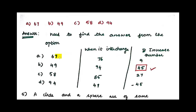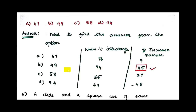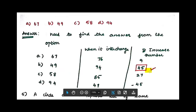So the answer is 67. Another option to check is 49: when interchanged, it becomes 94. The increase rate there is 45, but checking 49: 94 minus 49 is 45. So the answer is 49.